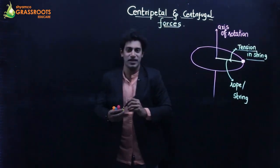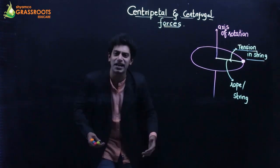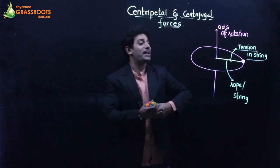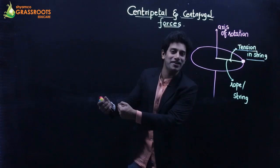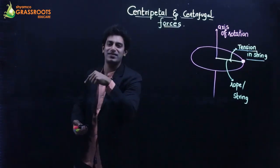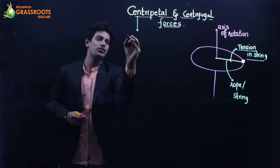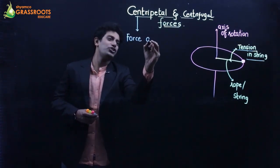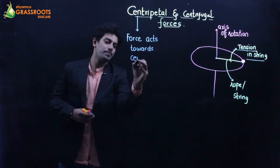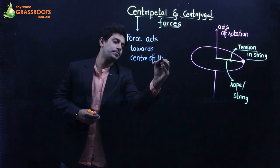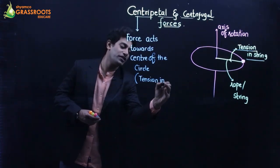This tension force — yeh tension force — is holding the rubber. I can see it, I can observe it, that the rubber is not moving out because of the holding strength, the tension of the string. And that force which acts towards the center is called centripetal force. So if someone asks you what is centripetal force, it is a force which acts towards the center of the circle, and it is represented by the tension in the string.